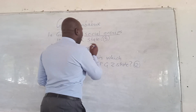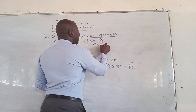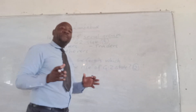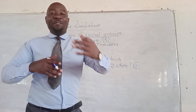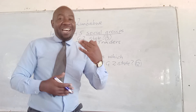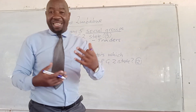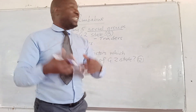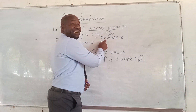We also had another social group which was called the Traders. The people at Great Zimbabwe were involved in trading. They traded with the foreigners — the Arabs, the Swahili, the Portuguese. And these people who were trading with the foreigners were called the Traders.